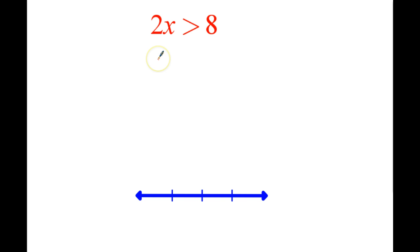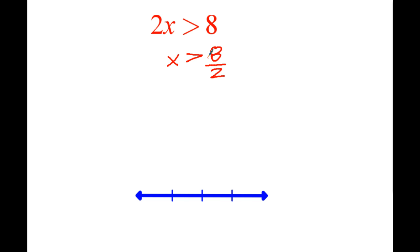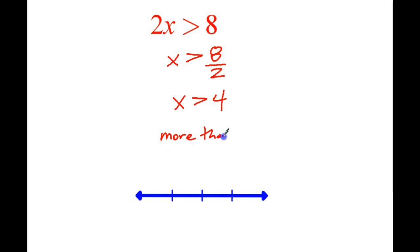So we'll just solve it the same way we did before. We keep the inequality here. So x is greater than 8 divided by 2, and that means x must be greater than 4. So all numbers more than 4 — any number higher than 4 — will work here.